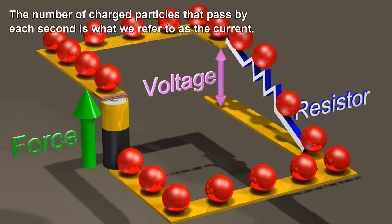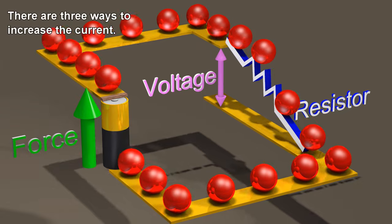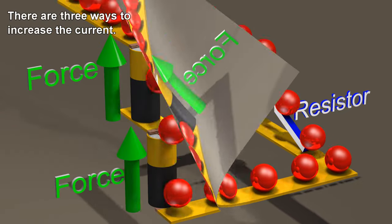The number of charged particles that pass by each second is what we refer to as the current. There are three ways to increase the current.